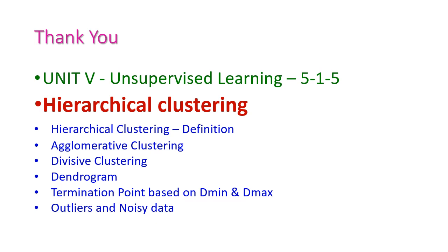So far we have seen hierarchical clustering from the 5th unit on unsupervised learning. In this class, we covered the definition of hierarchical clustering and the two types of clustering methodology — agglomerative and divisive. After that, we saw the dendrogram of hierarchical clustering, the termination point based on Dmin and Dmax, and outliers and noisy data. In the next class, we will see another important topic from the 5th unit. Thank you.